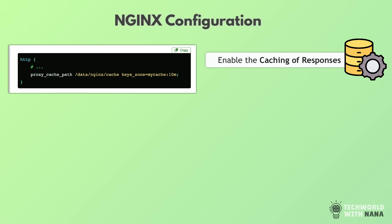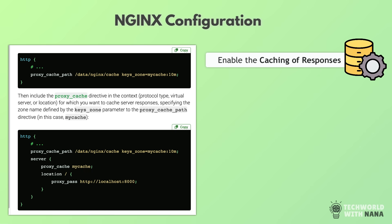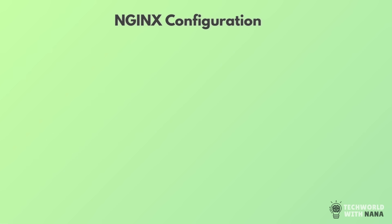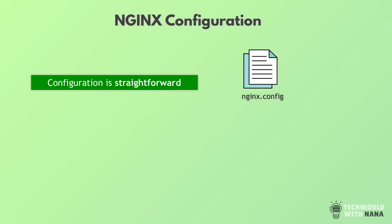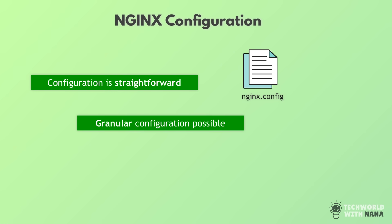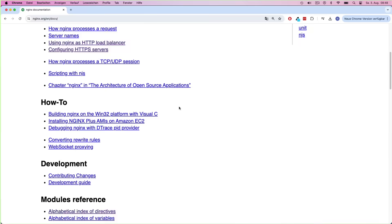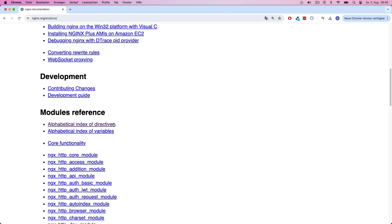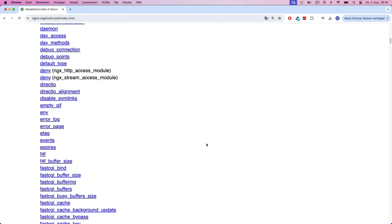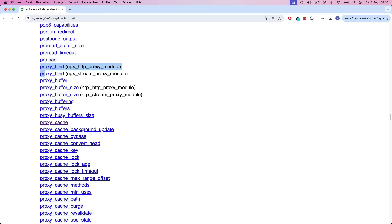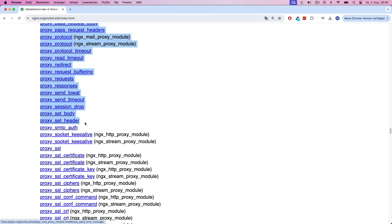You also have caching configuration with elements like how long the cache should be stored before it's refreshed. As you can see, the configuration of all these functionalities is pretty straightforward and also pretty granular — you can do tons of different configurations with Nginx. There's a full list of all configuration blocks and directives, which is quite a large list. Configurations for proxy functionalities have a proxy prefix so you can differentiate them as well.